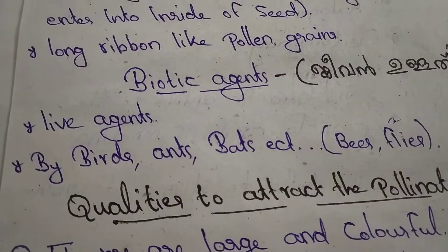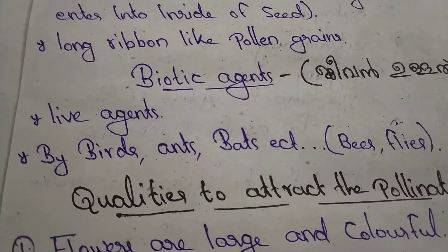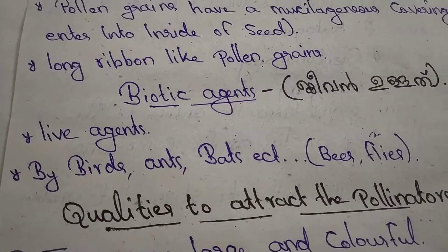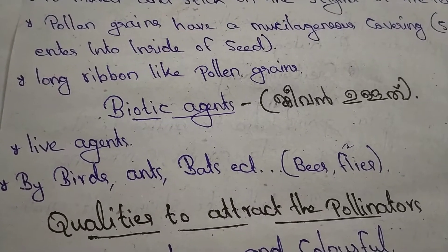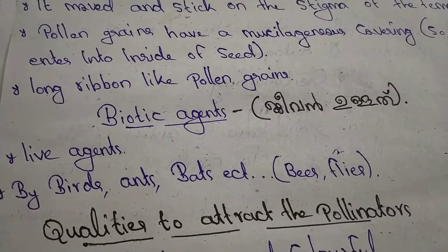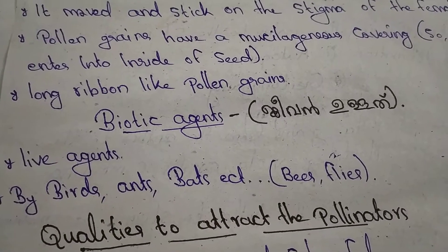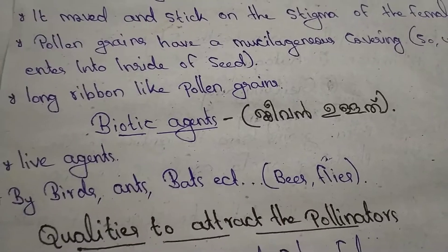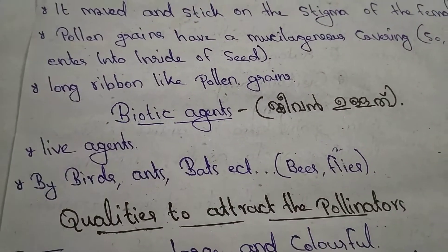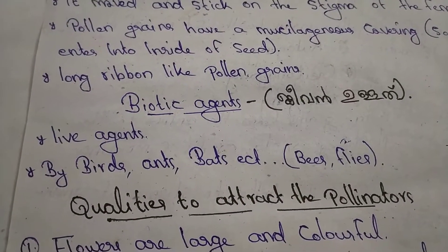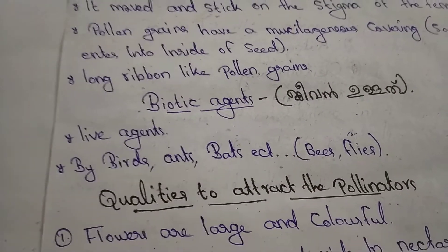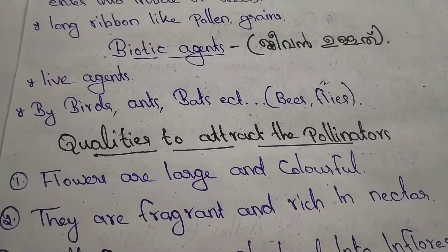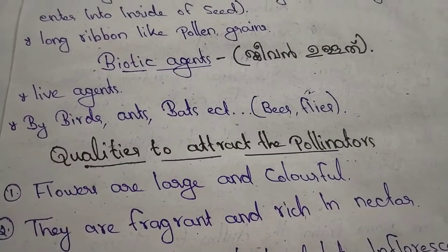That's why we have bio-agents: birds, flies, bats, bees. One important thing is qualities to attract the pollinators.